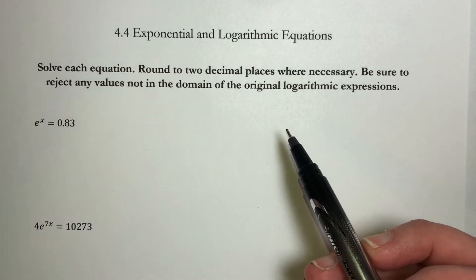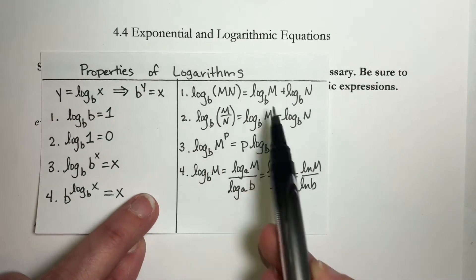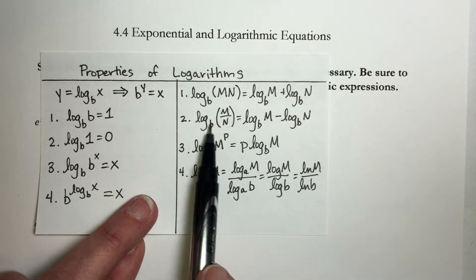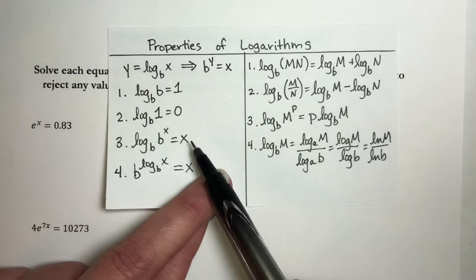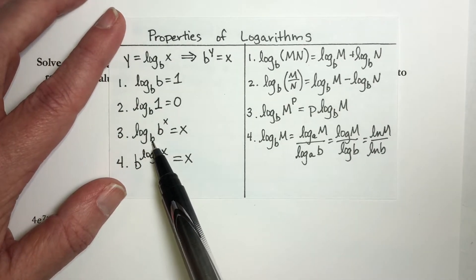There are a lot of different things we're going to be using in this section. We are going to have to combine things as much as possible in order to get things in the right form to solve. We might need to use a change of base formula. We're going to be using this a whole lot.